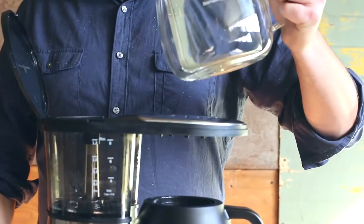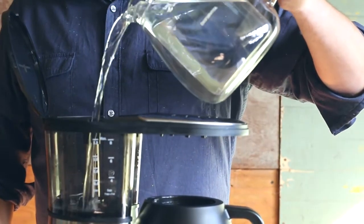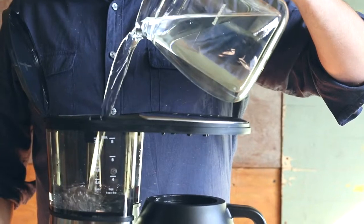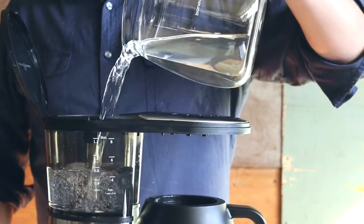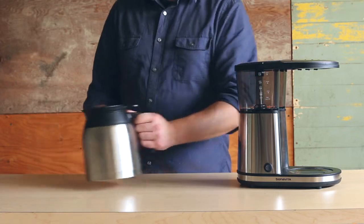Pour clean, cold water into the water reservoir and run the brewer through a full cycle. Repeat this step twice to make sure the brewer is completely clean. For our last demonstration, we'll show you how to clean your carafe starting with the lid.